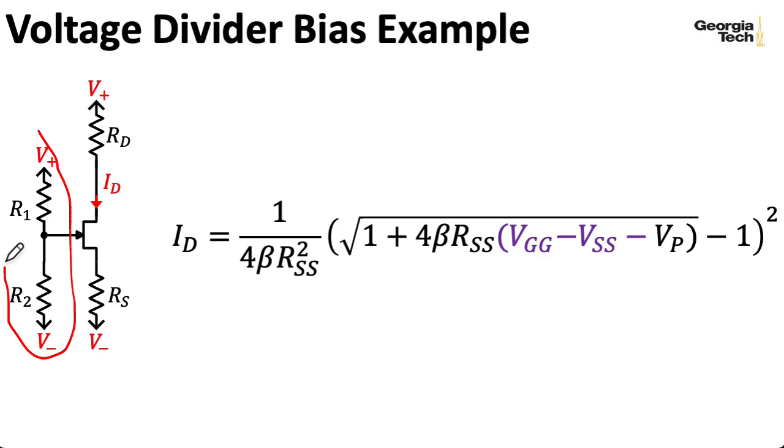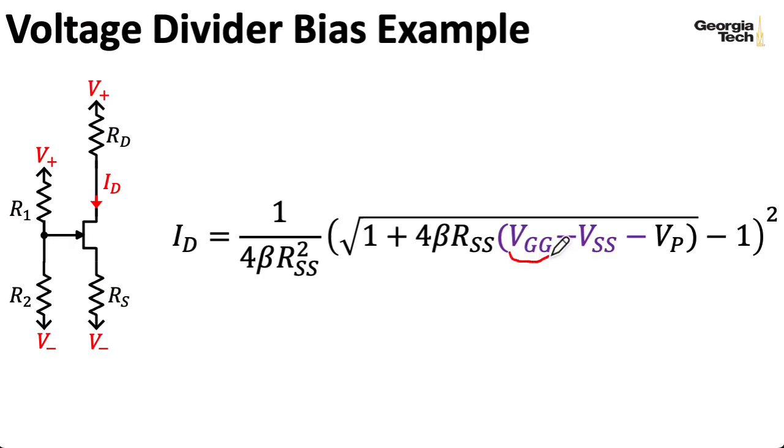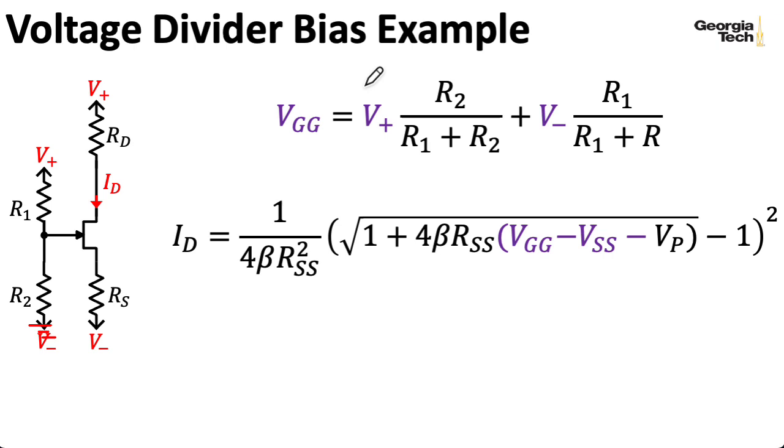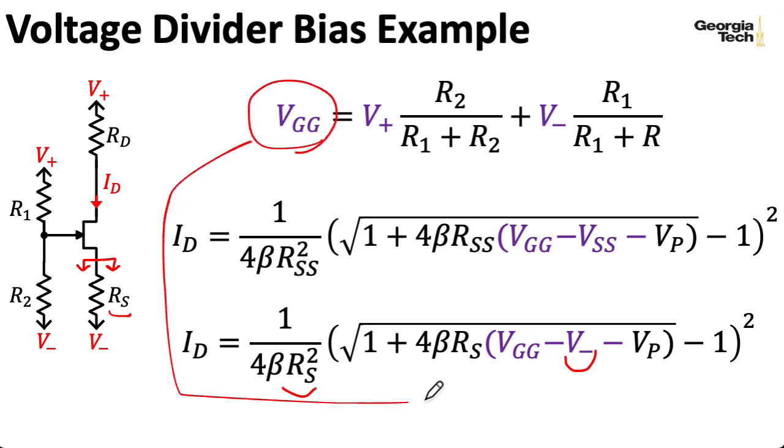Here's an example of a simple scheme used to bias the gate with a voltage divider, and this is equivalent to a similar scheme we looked at for BJTs. To find the Thevenin equivalent resistance seen looking out of the gate, I can just use superposition. If I temporarily ground V-, then I have a voltage divider for V+, where we are dividing over R2, and then I can temporarily ground V+, and we have a voltage divider where we are dividing across R1. So the Thevenin equivalent resistance seen looking out of the source is just RS. So I'll substitute that in for RSS. And for VSS, well, that's just V-, and I'm not going to bother spelling all of this out, but you can take your VGG here and plug it in here. And that will give you the drain current.